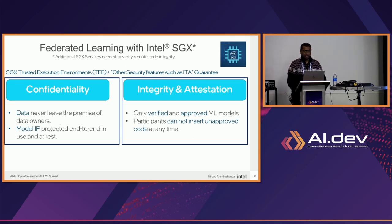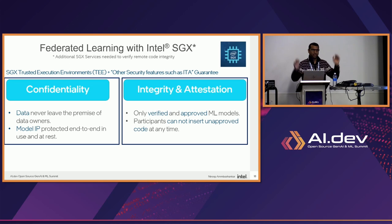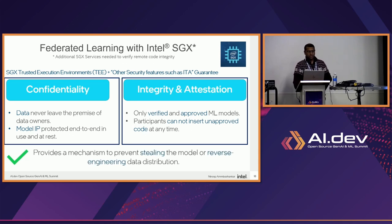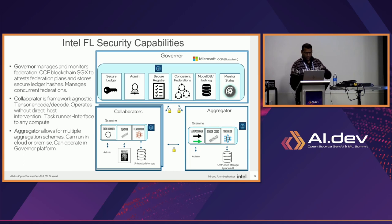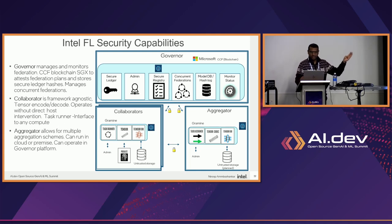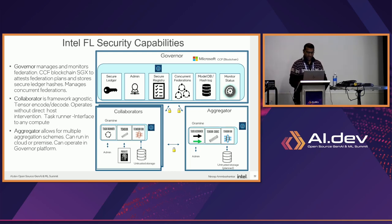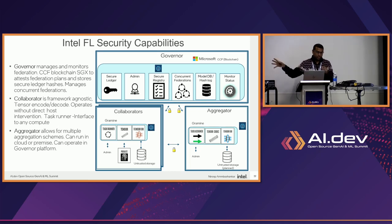Integrating attestation means that verified and approved ML models are running — as long as the FL plan is agreed upon by the aggregator, model owners, and collaborators before the experiment starts. Once the experiment starts, the enclave is secure and participants cannot insert unapproved code at any time. There's also a governor service with its own ledger admin security registry, checking that the participant is registered, that Intel SGX is valid, that everything in the plan is valid, and that the participant is known — only then will the experiment run.